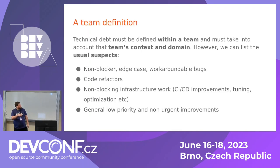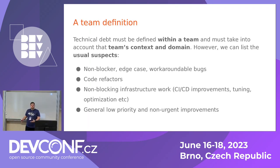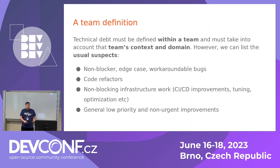The non-blocking edge case and workaround-able bugs; code refactors; non-blocking infrastructure work such as CI/CD improvements, database tuning, or infrastructure tuning; some optimizations; and general low-priority, non-urgent improvements. Nothing that's urgent — like one or two dirty dishes in the sink — but if they keep stacking, they will only hinder you in the long term.